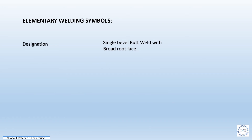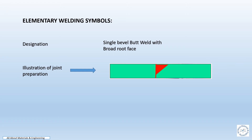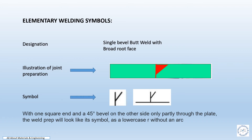Elementary welding symbol for single bevel butt weld with broad root face. The sketch represents the illustration of the joint preparation and the symbol will be as per the given sketch. With one square end and a 45 degree bevel on the other side only partly through the plates, the weld preparation will look like its symbol — a lowercase letter without an arc.